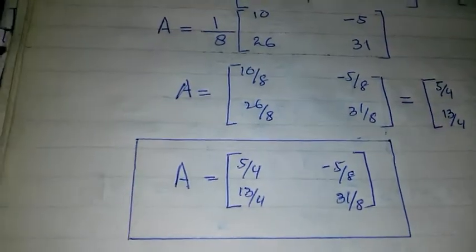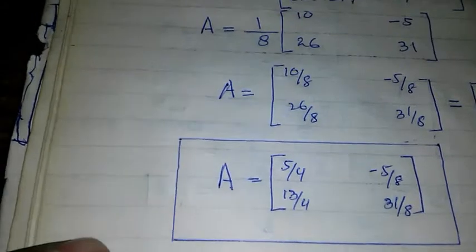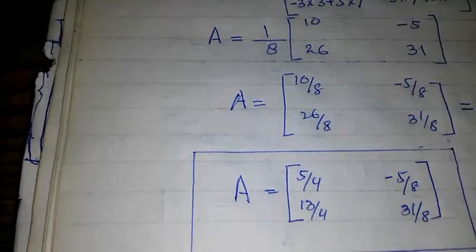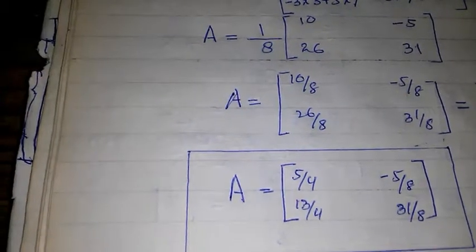So finally, we get the answer: the matrix A equals [5/4, -5/8; 13/4, 31/8].